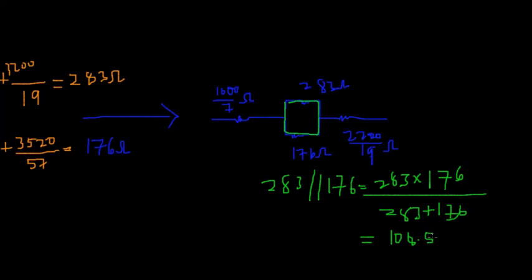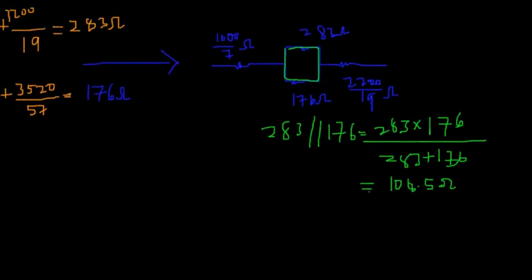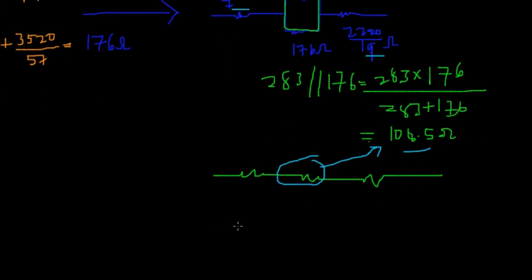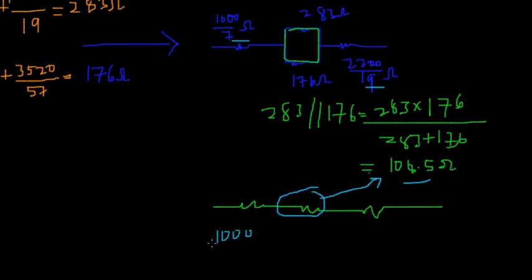So when you do the parallel calculation, you have 283 multiplied by 176, divided by 283 plus 176, and this gives us approximately 108.5 ohms. From here you can notice that the remaining resistors are all in series with this parallel combination, so we convert to this form and add them all up — giving us the final total equivalent resistance.